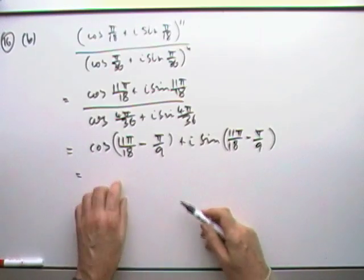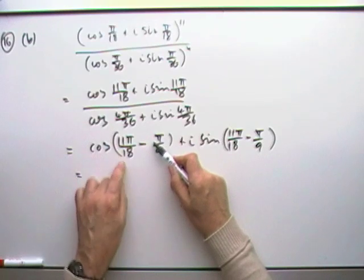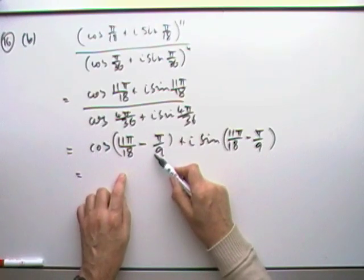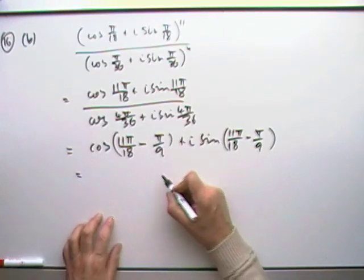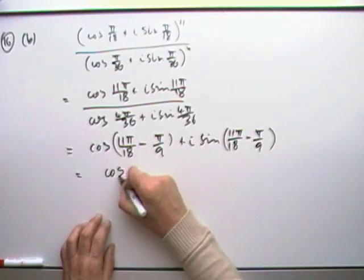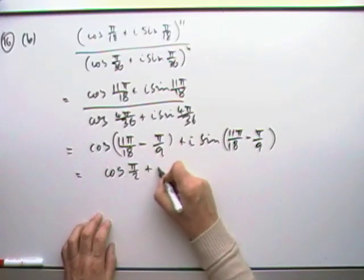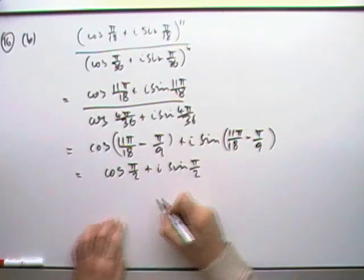So what's that when it's at home? Well, that's 2. 11 eighteenths take away 2 eighteenths is going to be 9. So it's 9/18, so that's π/2. So I've got cos(π/2), so that must be the same thing, plus i sin(π/2).